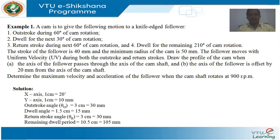Here I will take one example from uniform velocity motion. The problem is: a cam is to give the following motion to a knife-edged follower — outstroke during 60 degrees of cam rotation, dwell for the next 30 degrees of cam rotation, return stroke during the next 60 degrees of cam rotation, and dwell for the remaining 210 degrees of cam rotation.